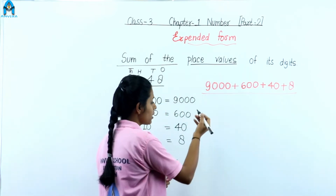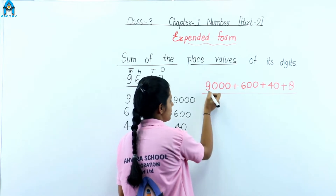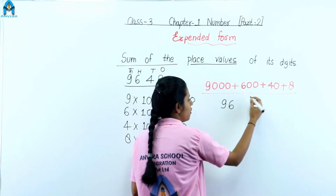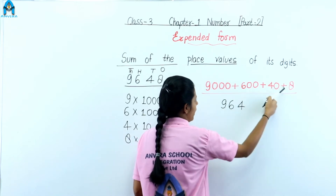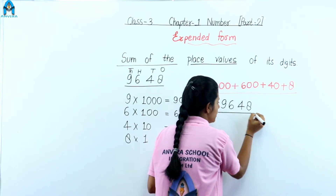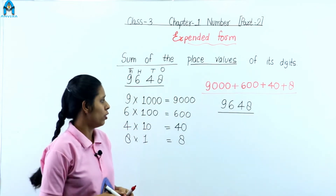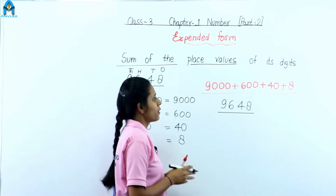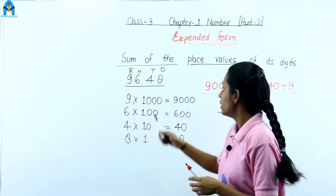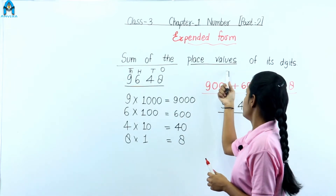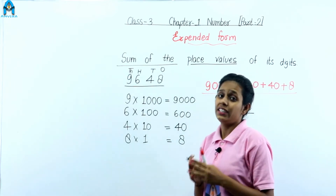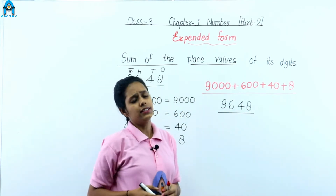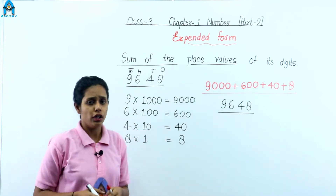Now what is short form? Just take the first digit — nine, then six, four and eight. So this is the short form and this is the expanded form. Expanded form is the sum of place values of its digits.